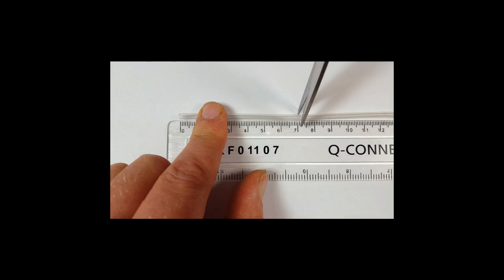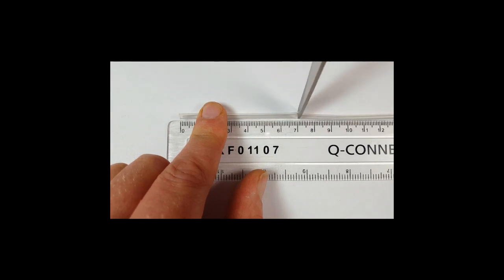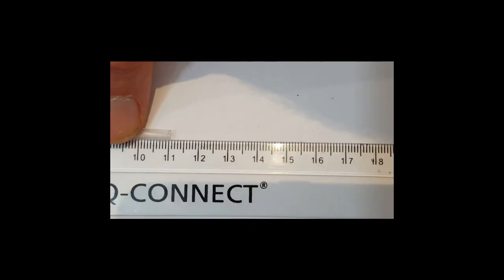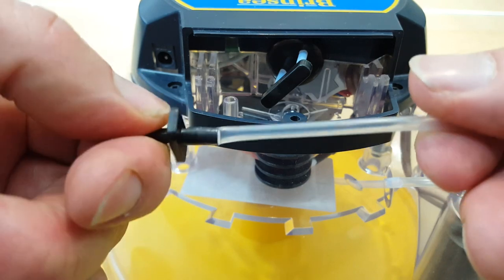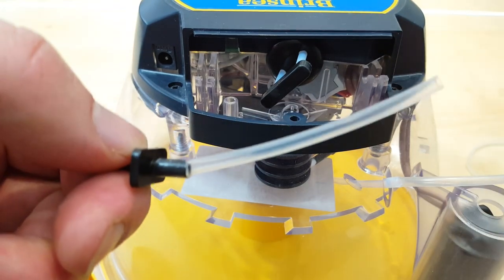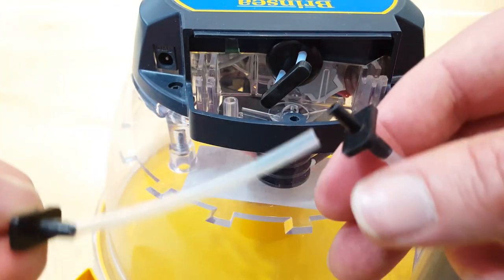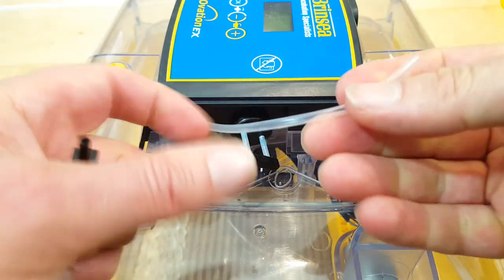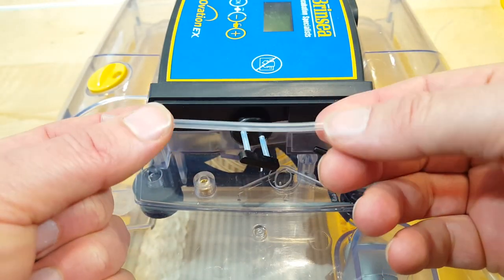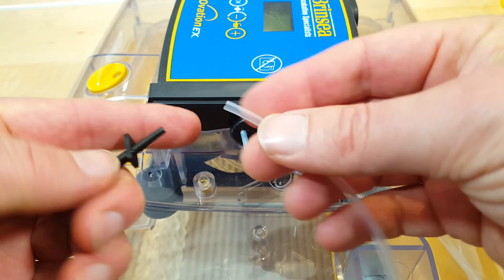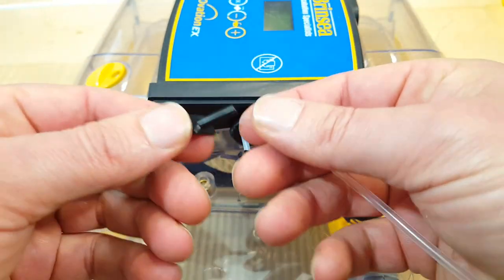Use a ruler and cut precisely to the right length with a pair of scissors. Remember you need 70mm for the Mini EX and Maxi EX and you need 110mm of tubing for the Ovation 28 EX and the Ovation 56 EX.